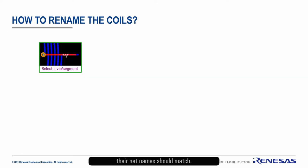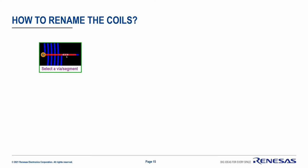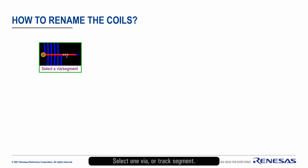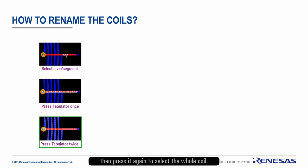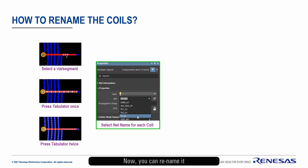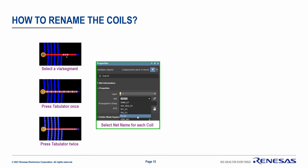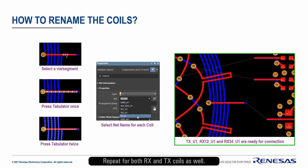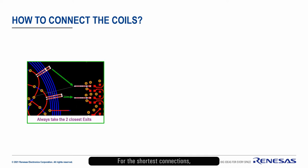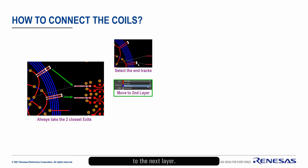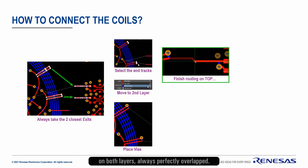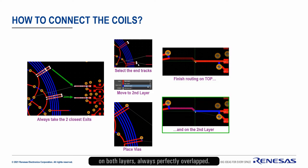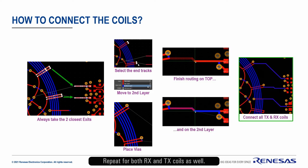To connect the coils to the template, their net names should match. Select one via or track segment, then press the tabulator. Press it again to select the whole coil. Now you can rename it to anything in your netlist. Repeat for both RX and TX coils as well. For the shortest connections, take the nearest exits. Open them by shifting the end piece to the next layer. Place vias, then start the routing on both layers, always perfectly overlapped. Repeat for both RX and TX coils as well.